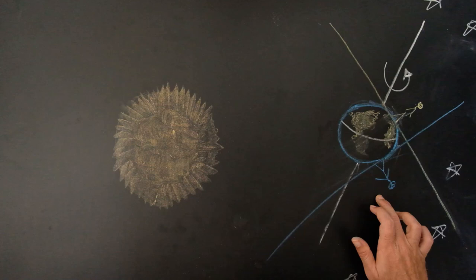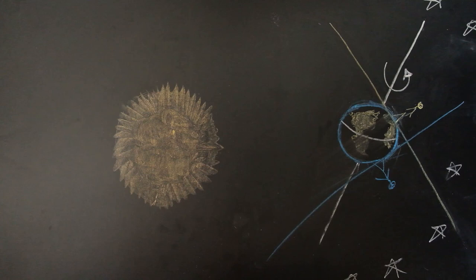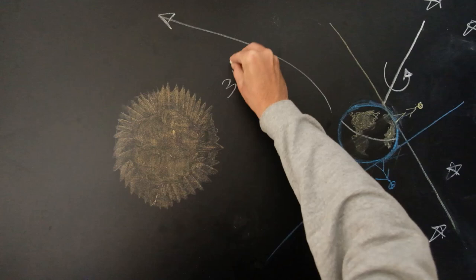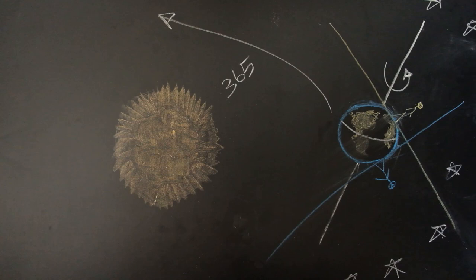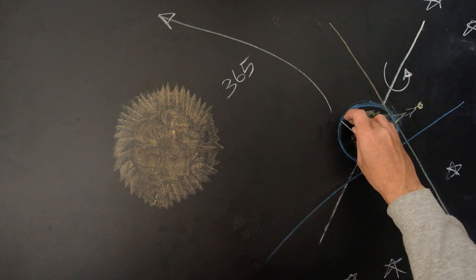These zones are different for observers at different locations. So everything depends on time and your location — it's a confusing picture. There is also a second motion: annual rotation, where every 365 days Earth completes one revolution around the Sun.